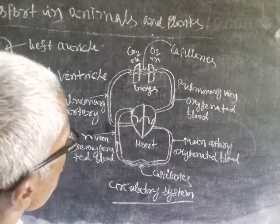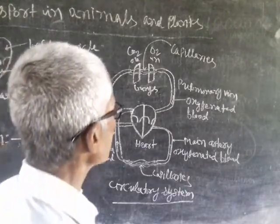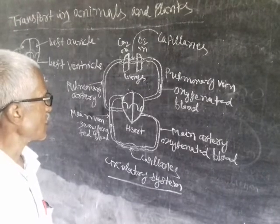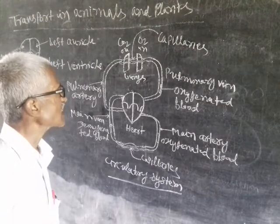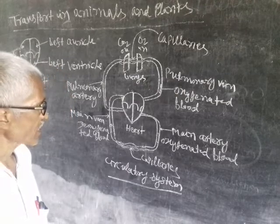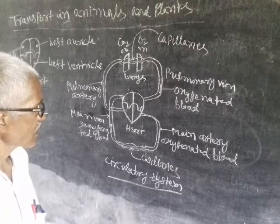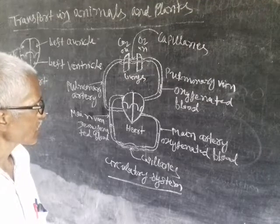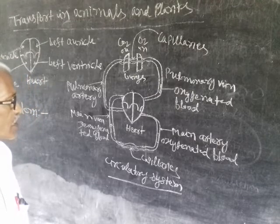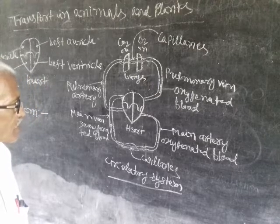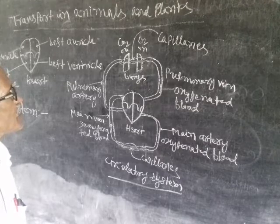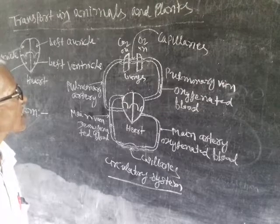In the circulatory system, oxygenated blood is carried by the pulmonary vein into the heart. This blood comes down into the ventricle. The main artery carries this oxygenated blood to the different cells of the body, where exchange takes place, due to which carbon dioxide is produced and the blood becomes deoxygenated.